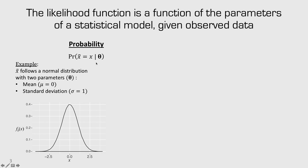Let's look at a standard normal distribution. This distribution has a mean set at zero and a standard deviation of one. This is the probability density function, and we can ask, for example, what is the probability that this random variable equals zero? To answer that we just read off of the PDF, and it's about 0.4. So at x equals zero, the value is about 0.4. That's probability.